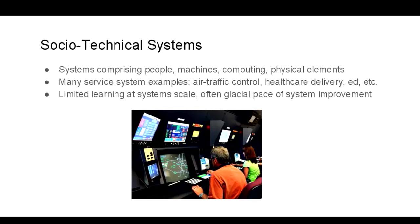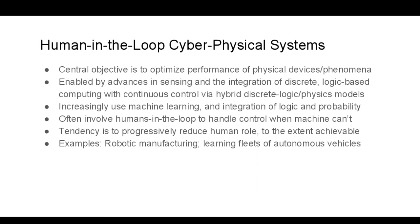These systems are viewed as comprising people, machines, computing, and physical elements — there's a picture here of an air traffic control system, for example. Key points are that these systems often are not designed for rapid and comprehensive learning. We often see a glacial pace of system improvement. That's true in air traffic control, in healthcare, in education, and in many of these systems. It's not that they don't learn at all — they do, for example from accident analyses — but the systems overall are designed for very limited rates of learning, with emphasis often on performance and reliability as opposed to rapid evolution toward higher states of fitness.